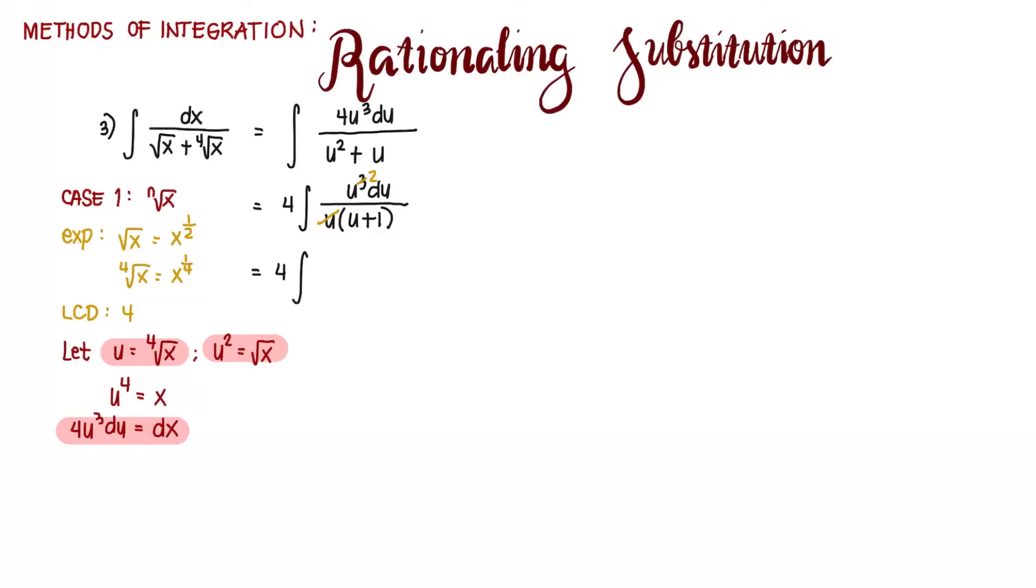4 integral of u squared du divided by u plus 1. So we have an improper fraction. We perform long division. We divide. That's u squared divided by u plus 1. It's always the first term divided by the first term wherein the polynomial is arranged according to the degree from the highest to the lowest. So u squared divided by u is u.